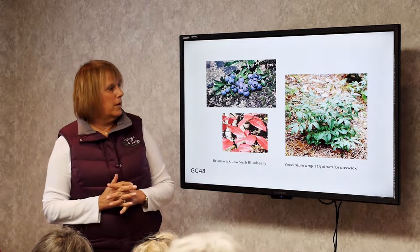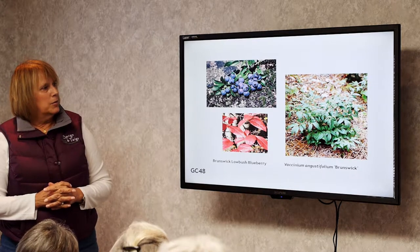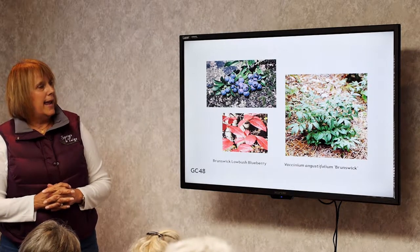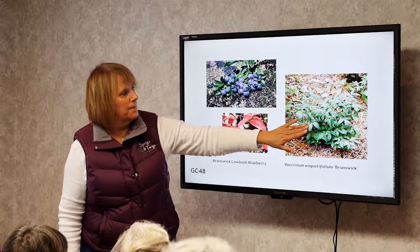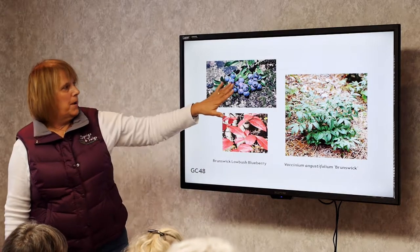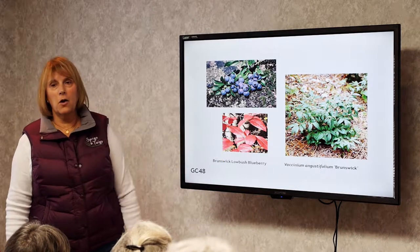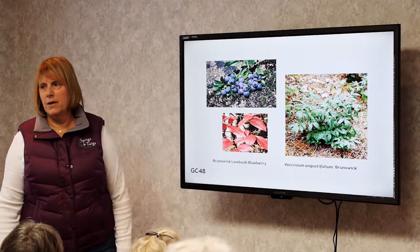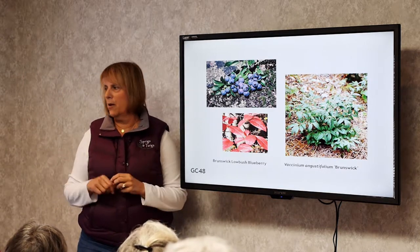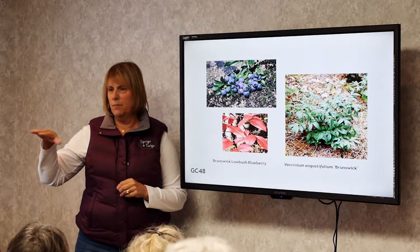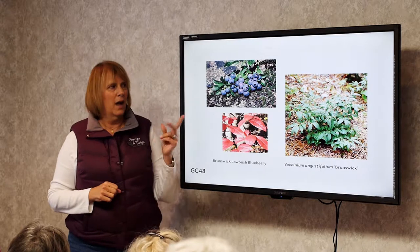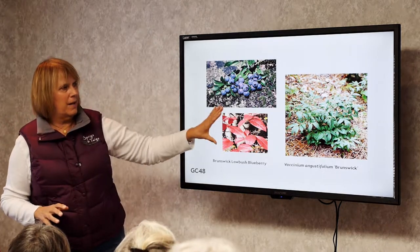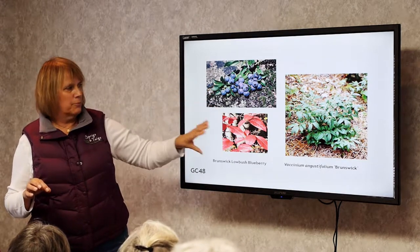Blueberries. I use a lot of blueberries as ground covers in my designs. This particular one, Brunswick, gets about a foot to a foot and a half tall by about 3 feet wide. It has bell-shaped white flowers in the spring, berries you can eat in the summer, and red fall color before dropping its leaves for winter. With lowbush blueberries, the birds usually get the berries because they're very tiny. I have about 20 of these in my yard — all blueberries share the same attributes: white flower in spring, blueberry in summer, and bright red fall color.